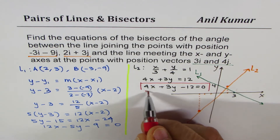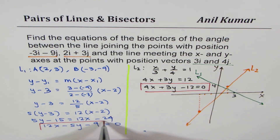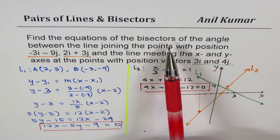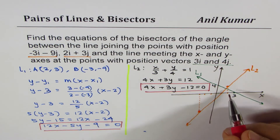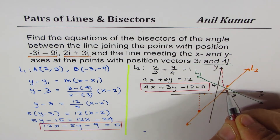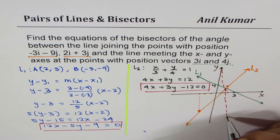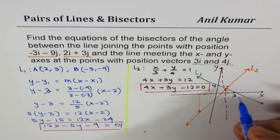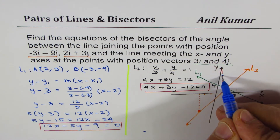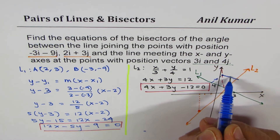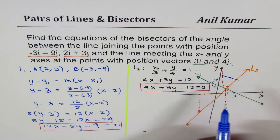The question asks us to find the equations of the bisectors of the angle between these two lines. What that means is: if I have a bisector going through the intersection point, then the perpendicular distance from any point on the bisector to line L1 must be equal to its perpendicular distance to line L2. Those two distances are always equal for any point on the angle bisector.